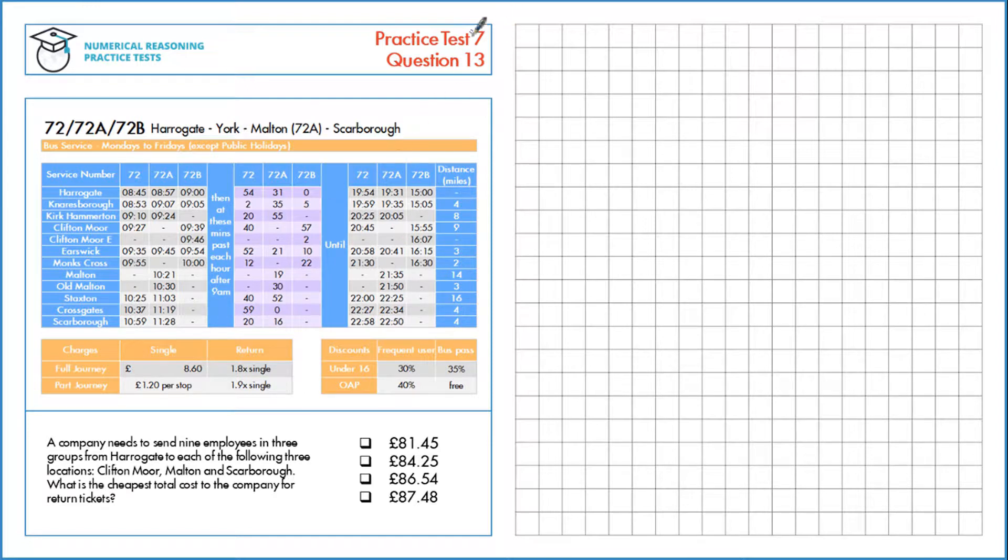The next thing we need to do is calculate the part journey at £1.20 per stop. From here, that's two stops multiplied by £1.20 per stop multiplied by three people.